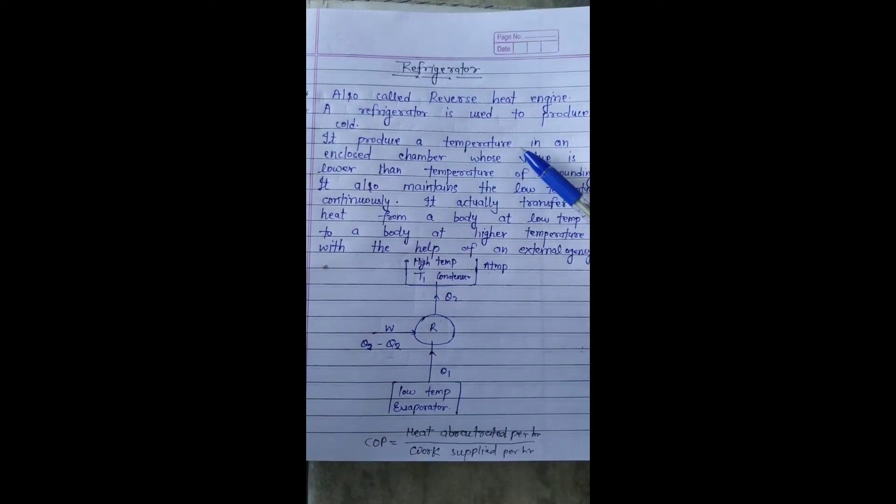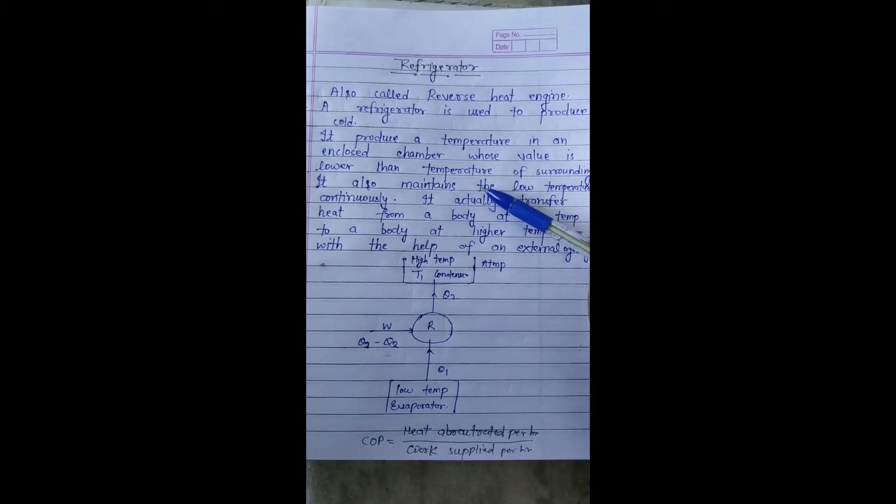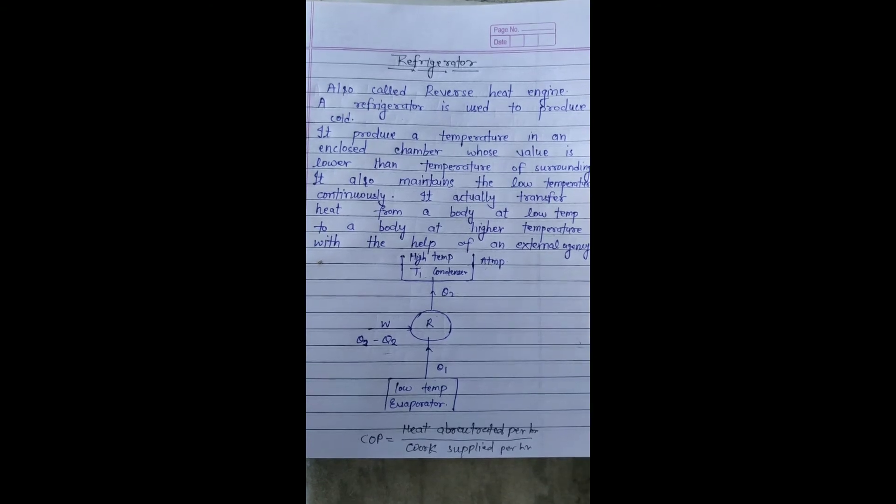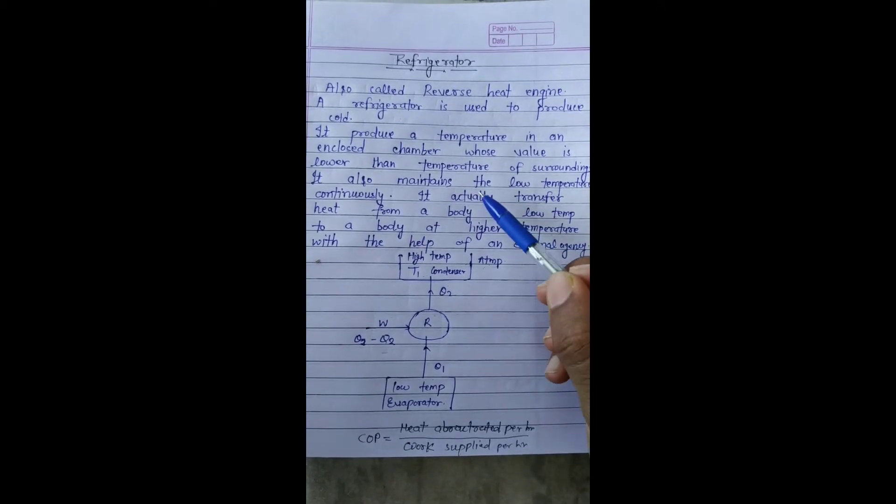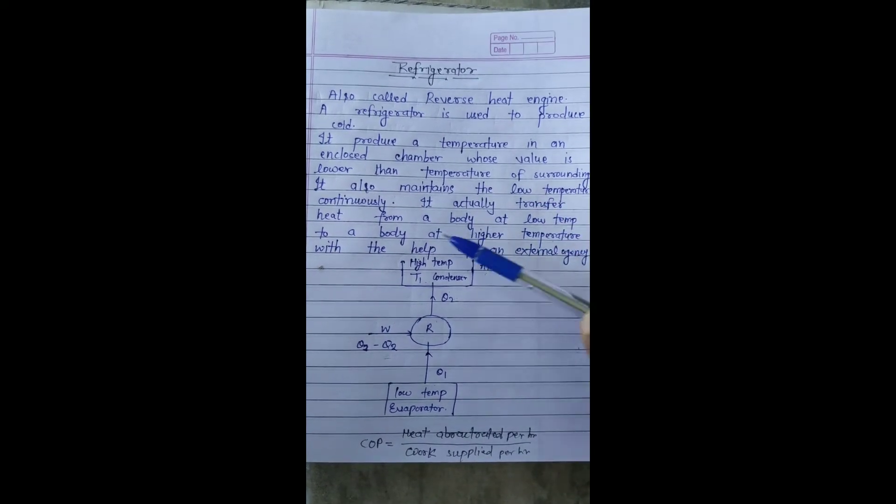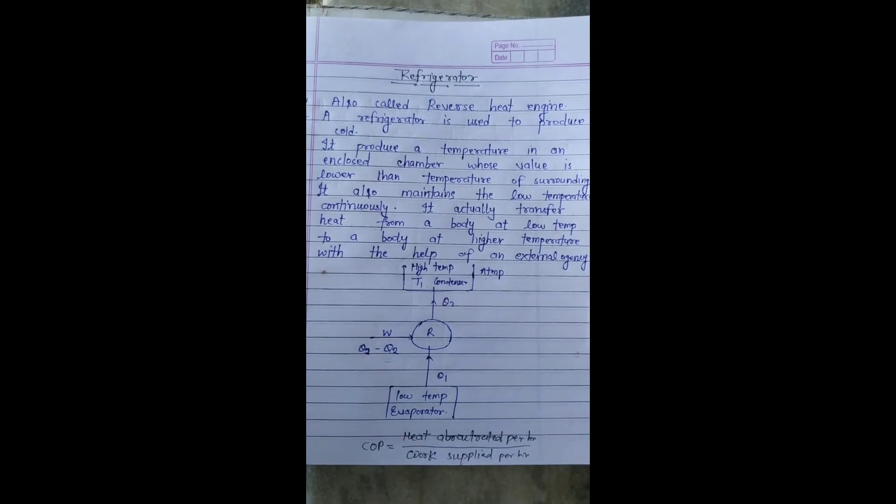It produces a temperature in an enclosed chamber whose value is lower than the temperature of the surrounding. What is our enclosed chamber? What is the temperature of the atmospheric temperature? It is very low. It also maintains the low temperature continuously. What is our low temperature? It continuously maintains it.